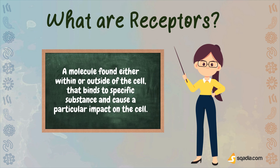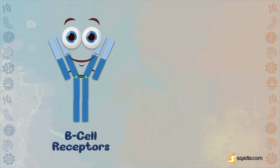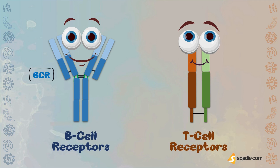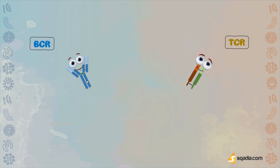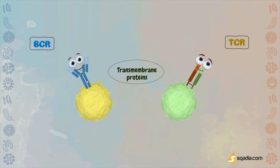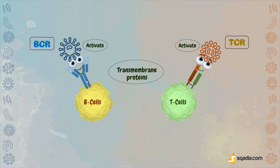There are plenty of receptors found in our body. But here, the two vital sets of receptors we are going to learn about are B-cell receptors — we simply call them BCRs — and T-cell receptors, which we call TCRs. Both BCRs and TCRs are protein molecules that are transmembrane receptors, found over the surface of immune cells. BCRs are found over the surface of B-cells, and TCRs are found over the surface of T-cells. Once they encounter any antigen, they get activated and produce a response inside their respective cells by initiating a signaling cascade.